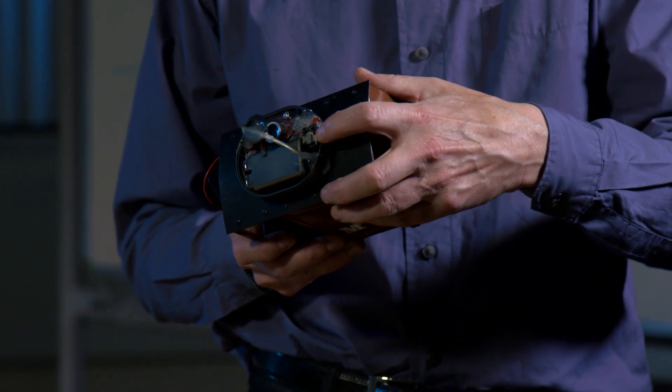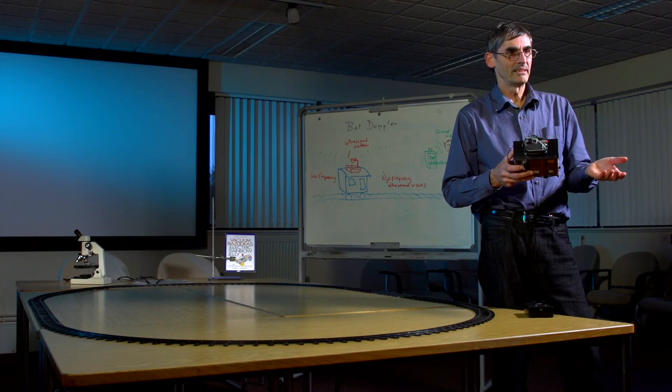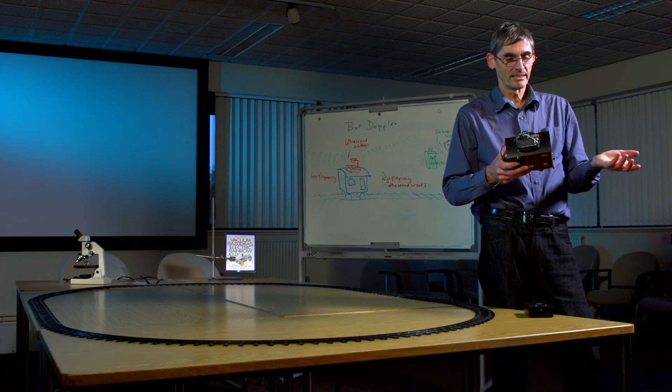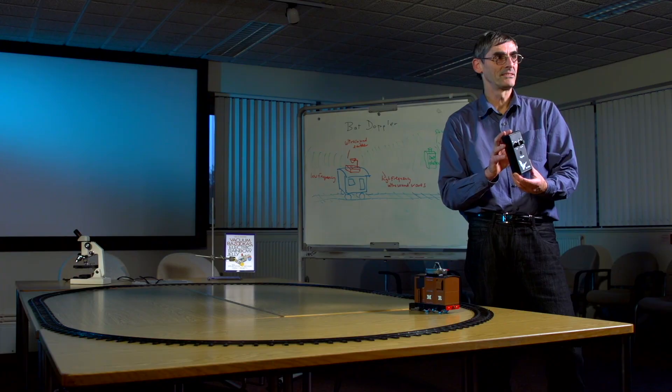So of course I can switch this ultrasonic emitter on and you'll see the red LED tells you it's on, but it emits 40 kilohertz which we can't hear, but we can convert that 40 kilohertz into a lower frequency using a BAT detector like this one. This will convert 40 kilohertz to 2 kilohertz.